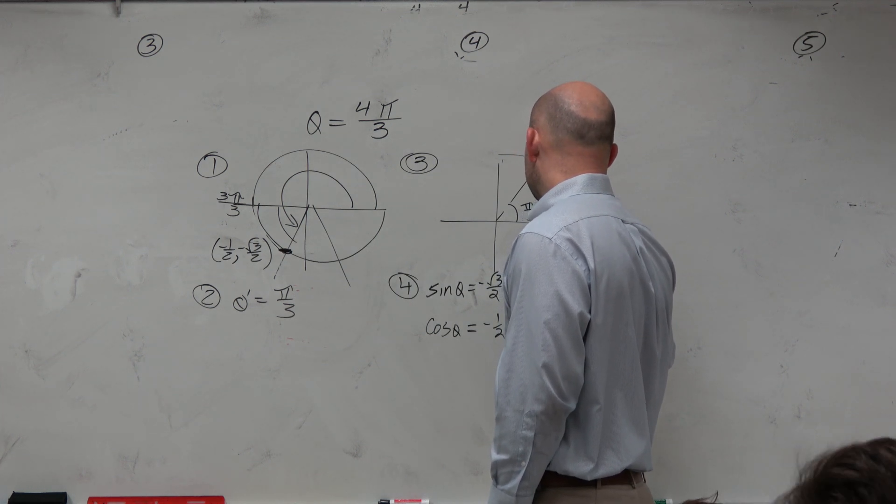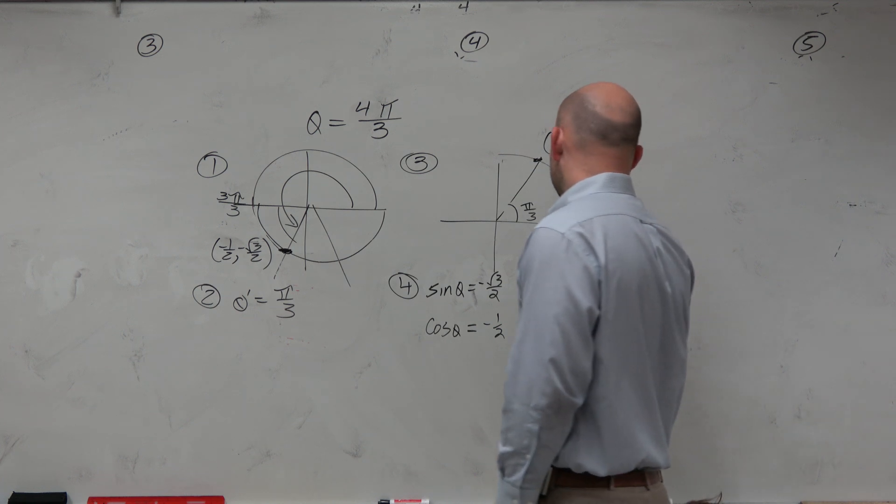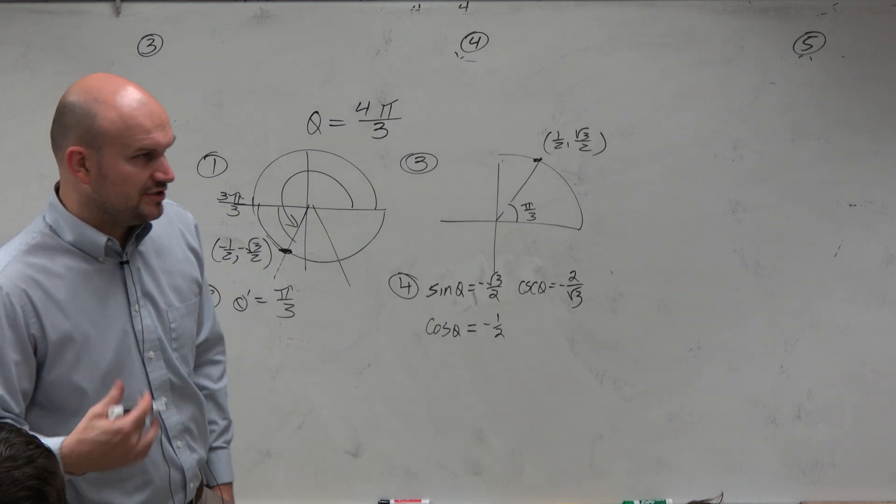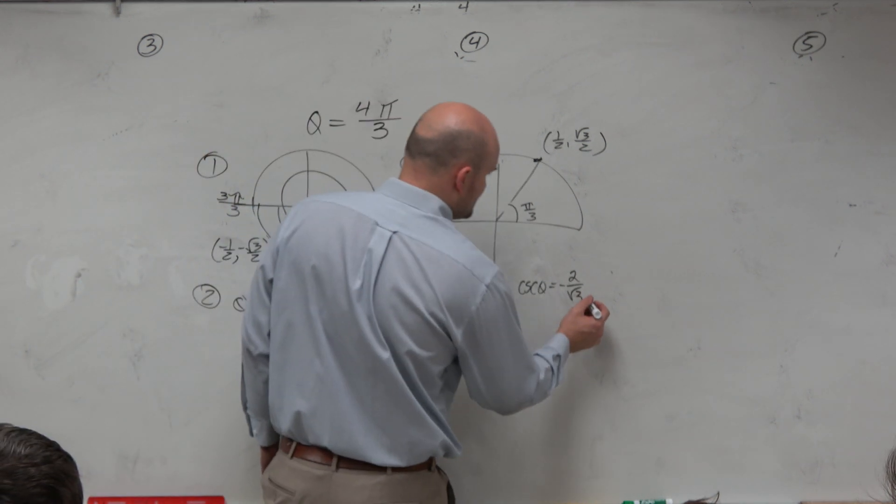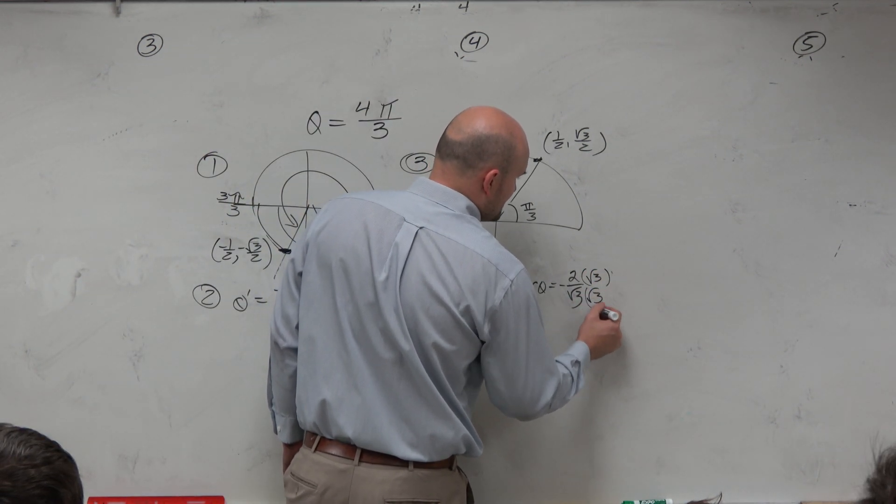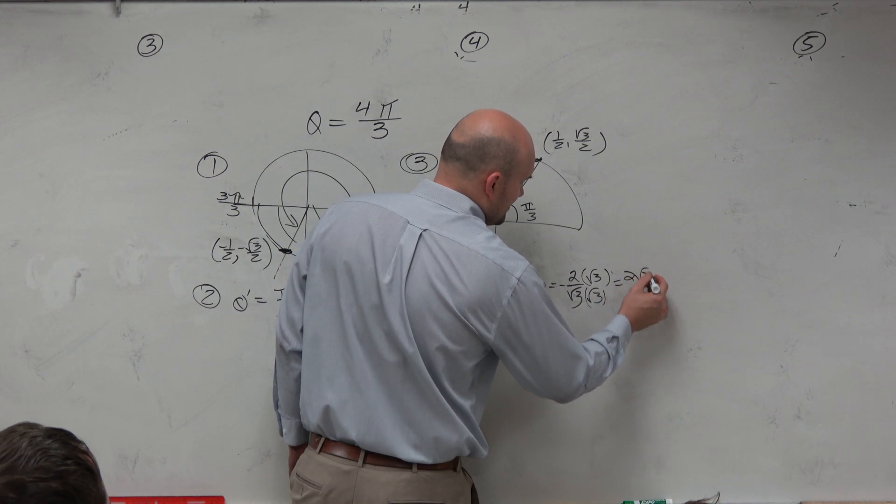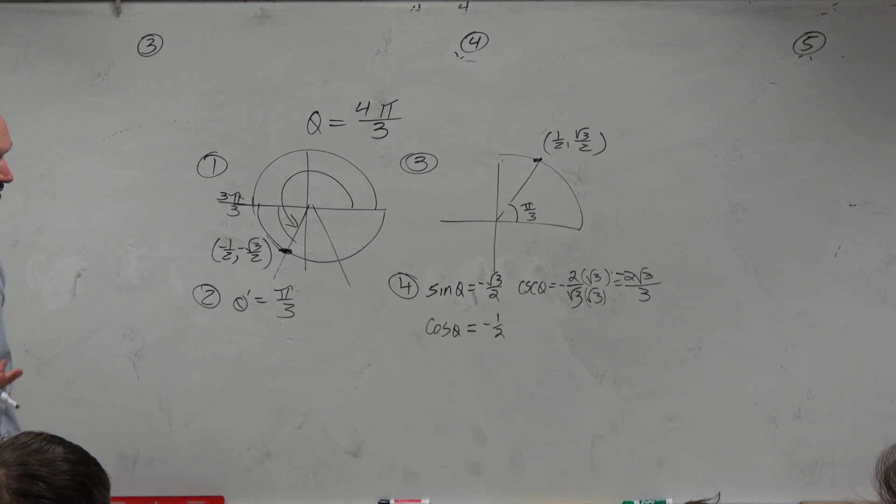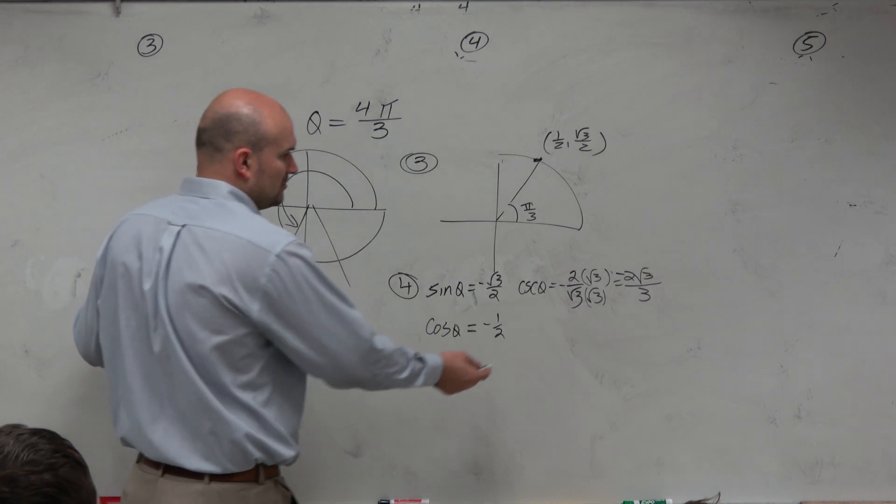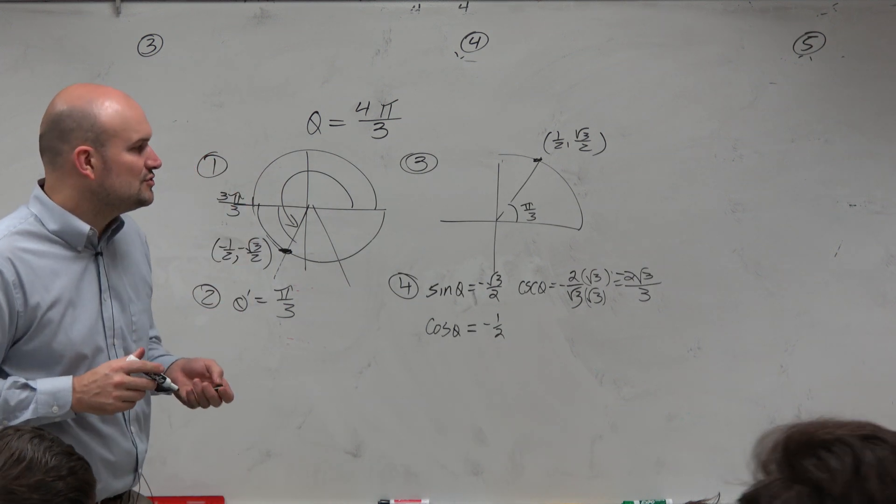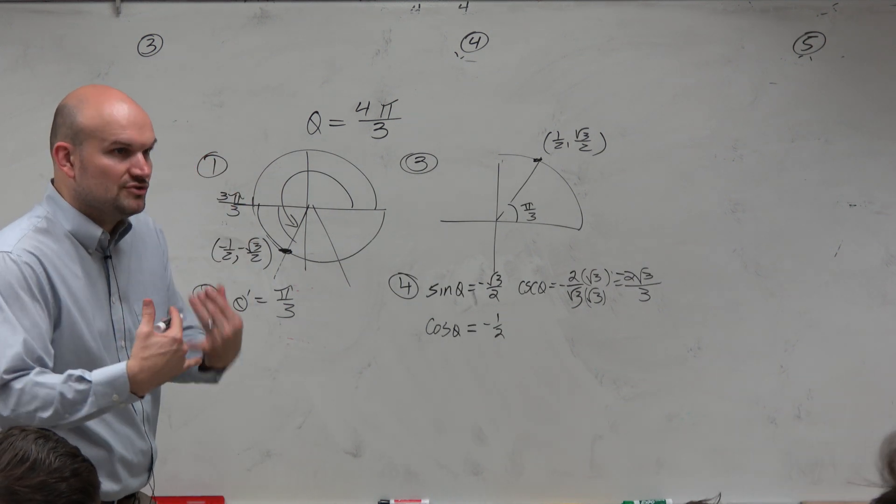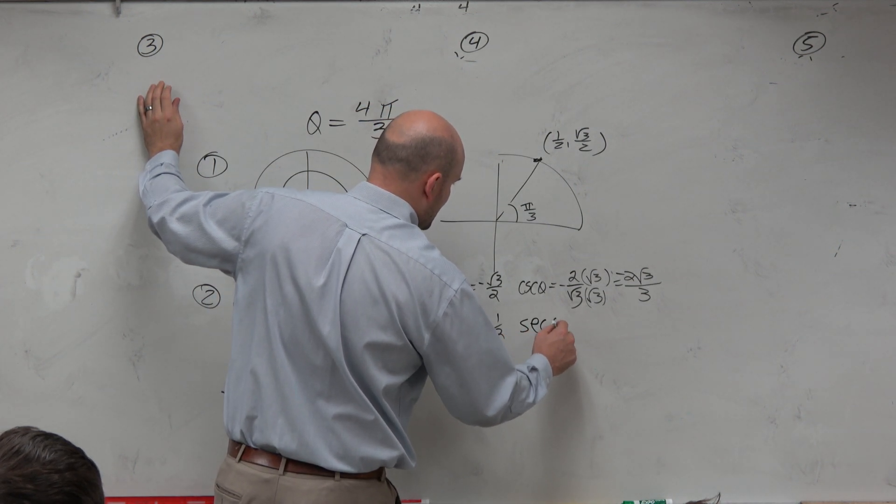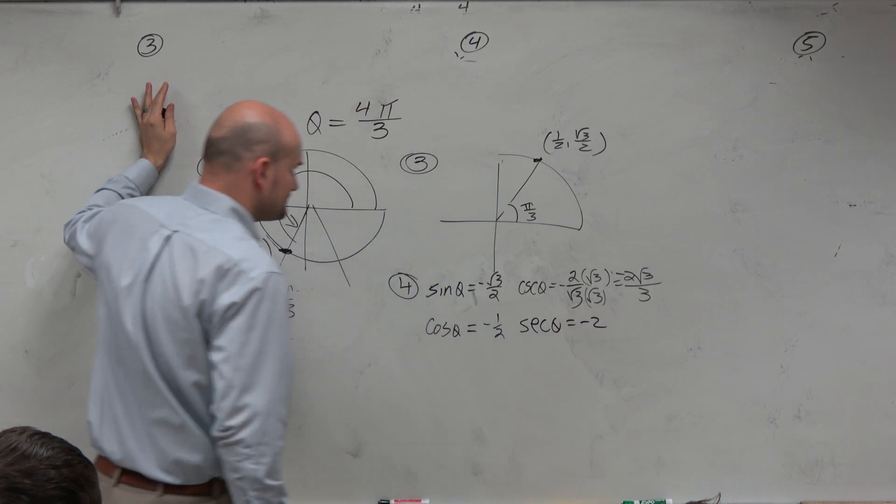And I'll do tangent last. So cosecant of θ, which is the reciprocal of sine, is going to be -2 over √3. You guys are going to get very familiar with doing these. And once you guys do this work once, like rationalizing the denominator, you guys are going to see these answers keep on repeating. So my goal is for you guys to get so familiar with this work here that you remember that, oh, 2 over √3, that's just 2√3 over 3. Like you should get to know these answers very quickly. The reciprocal of cosine is secant of θ, which is just -2.